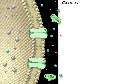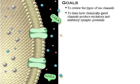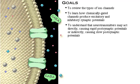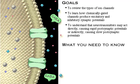Your goals for learning are to review the types of ion channels, to learn how chemically gated channels produce excitatory and inhibitory synaptic potentials, and to understand that neurotransmitters may act directly, causing rapid postsynaptic potentials, or indirectly, causing slow postsynaptic potentials.